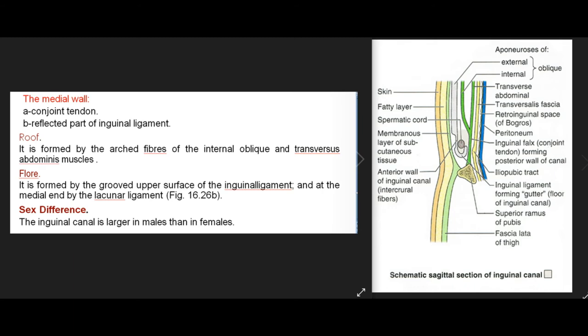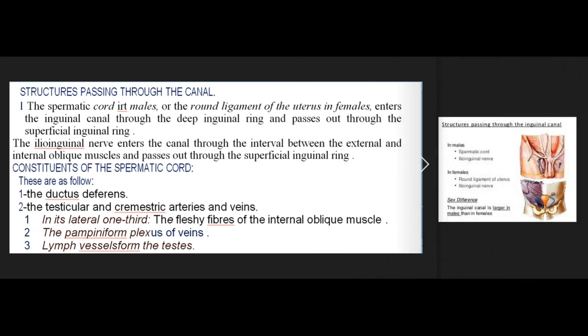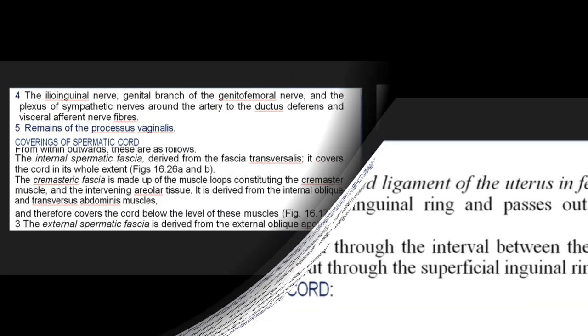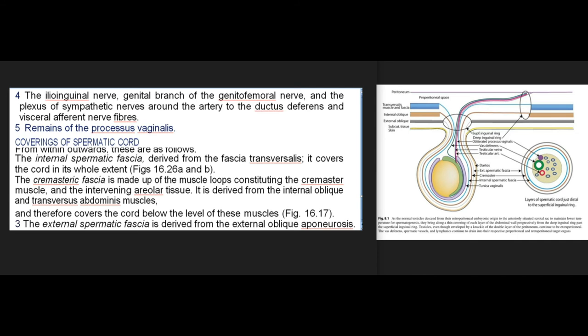The inguinal canal is larger in males than in females. Structures passing through the canal: the spermatic cord in males or the round ligament of the uterus in females, entering through the deep inguinal ring and passing out through the superficial inguinal ring; and the ilioinguinal nerve, which enters through the interval between the external and internal oblique muscles and passes out through the superficial inguinal ring. Constituents of the spermatic cord: the ductus deferens; the testicular and cremasteric arteries and veins; in its lateral one-third, fleshy fibers of the internal oblique muscle; the pampiniform plexus of veins; lymph vessels from the testes; the ilioinguinal nerve, genital branch of the genitofemoral nerve, and plexus of sympathetic nerves around the artery to the ductus deferens; and remains of the processus vaginalis.